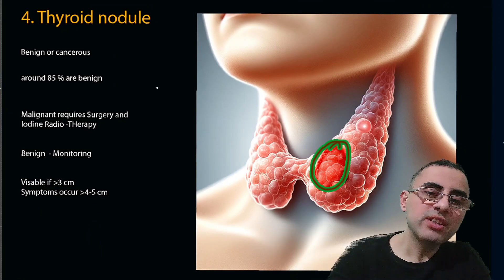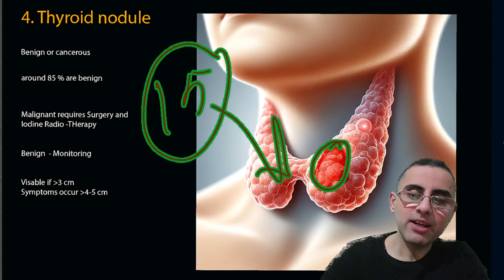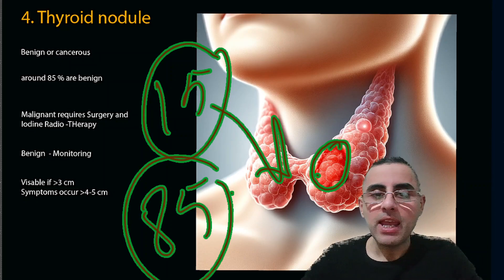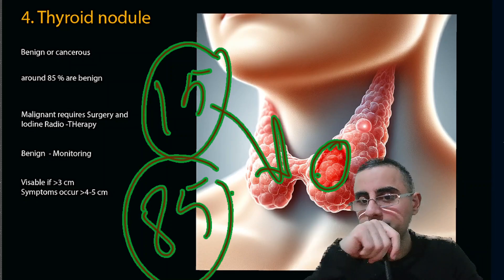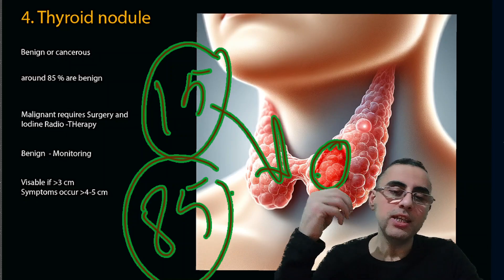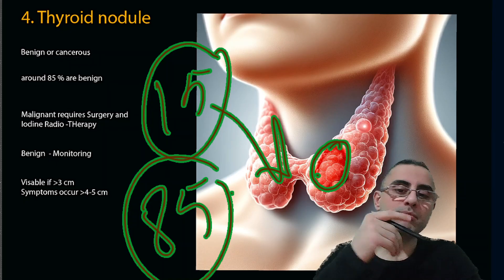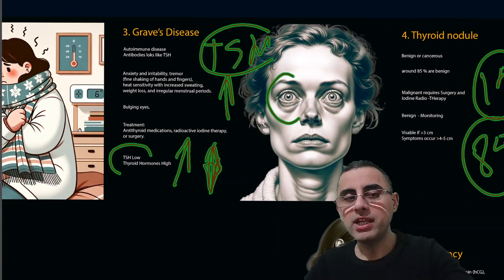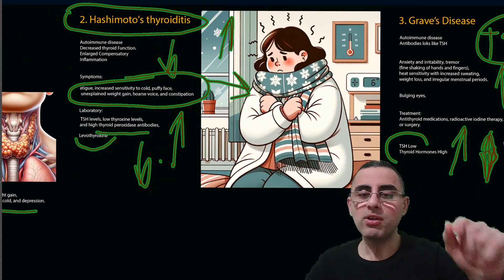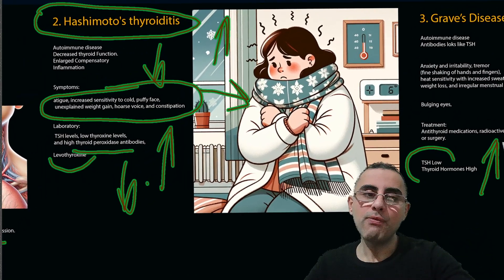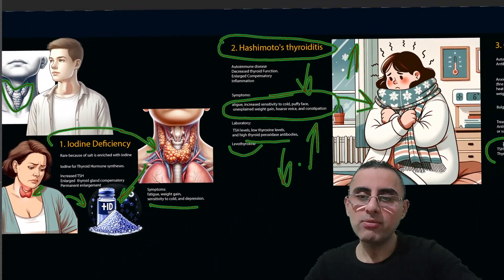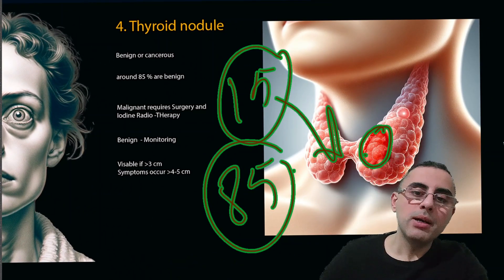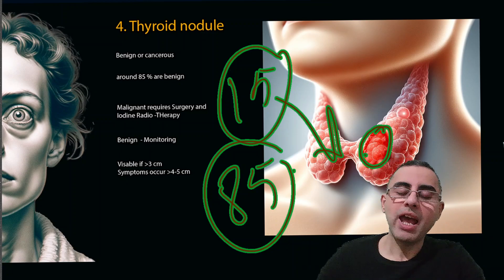The fourth most common cause of goiter is thyroid nodules. Thyroid nodules can be malignant — about 15% of nodules, especially solitary nodules, can be cancer — but the majority, 85%, are benign. In men, a nodule carries a higher risk of being cancer; in women, it is more often benign. Graves' disease is more common in women under 40, and Hashimoto's thyroiditis more common in women over 40. Iodine deficiency affects both sexes.